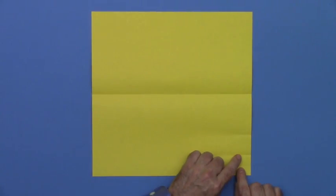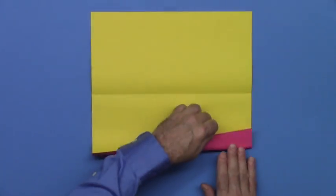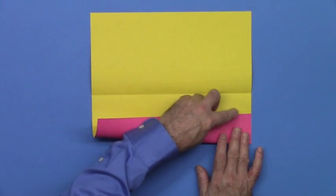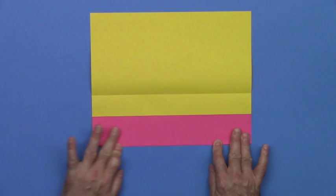Now we're going to lay the lower pinch mark upon the upper one. One pinch mark upon the other. Fold all the way across.